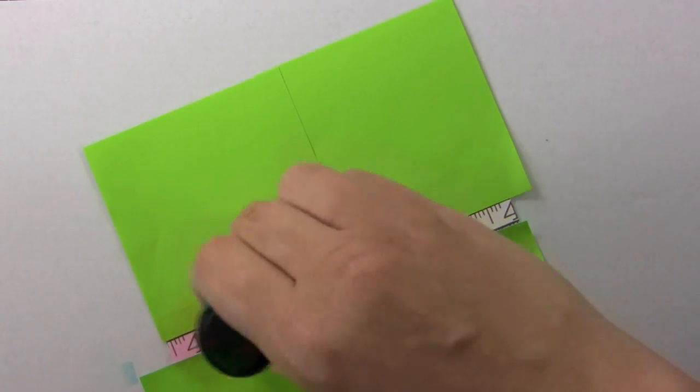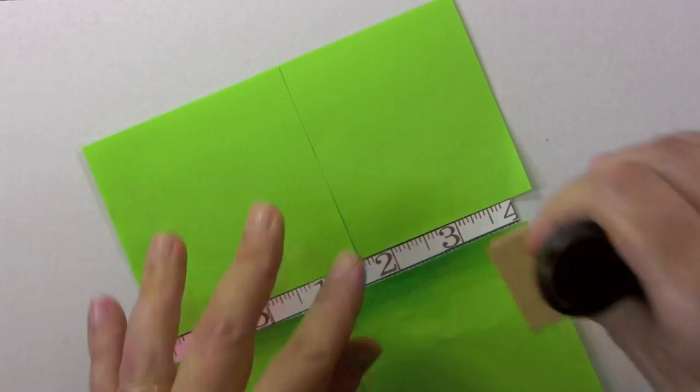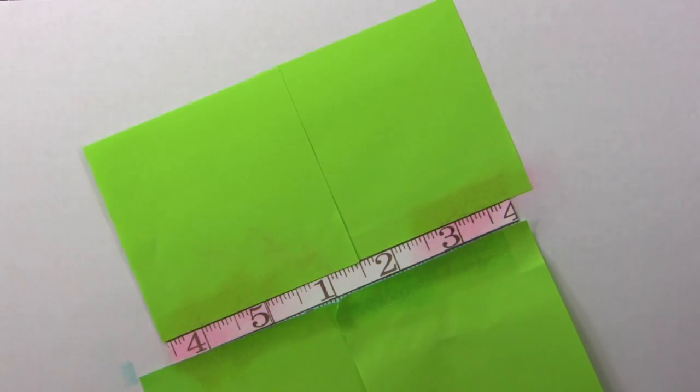And we're just going to do it the same way, just rubbing the ink on that middle ruler that's masked off.